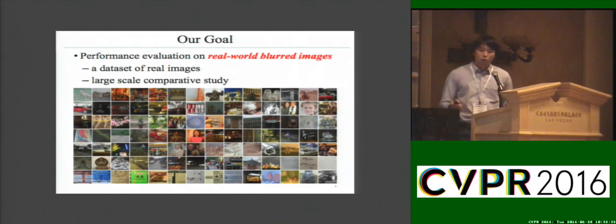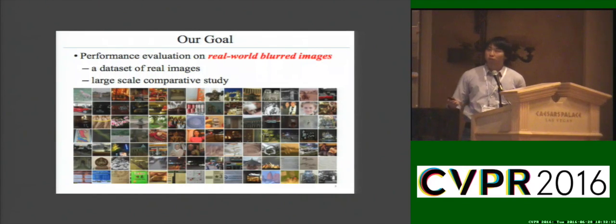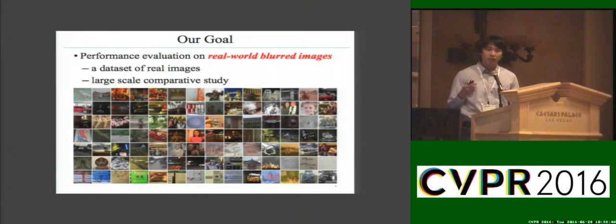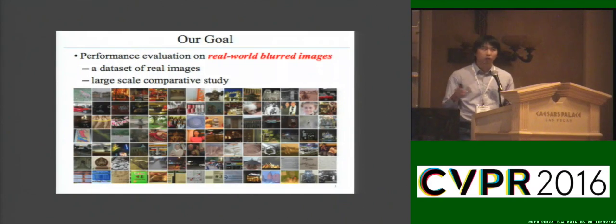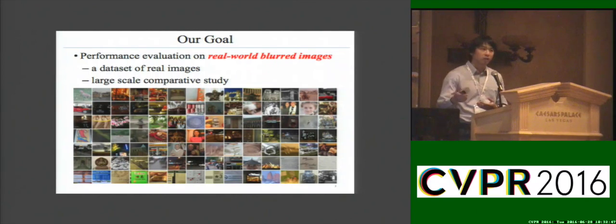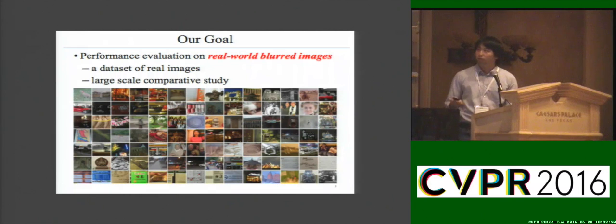So in this work, we provide the first large-scale performance evaluation of blind motion deblurring algorithms on real-world blurred images. We first collect a dataset of 100 real blurred images from different sources, and we conduct a user study and comparative analysis to understand the relative strength of state-of-the-art algorithms.